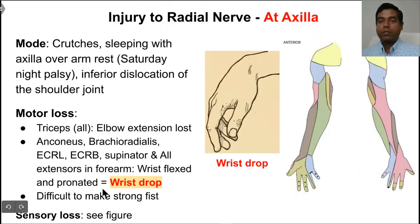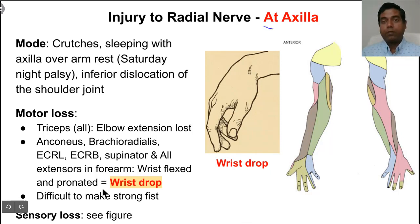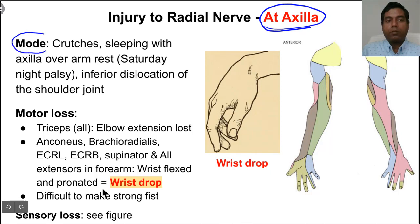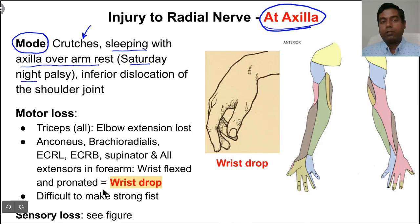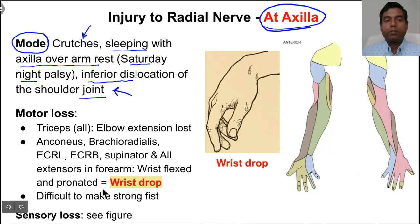Next, we will see what happens if there is injury to the radial nerve at different levels. First, if the radial nerve is injured at the axilla, the mode of injury includes badly fitting crutches putting pressure on the radial nerve, or people sleeping over a chair with the axilla over the armrest — called Saturday night palsy, when people fall asleep under the effect of alcohol. Also, inferior dislocation of the shoulder joint can damage the radial nerve.